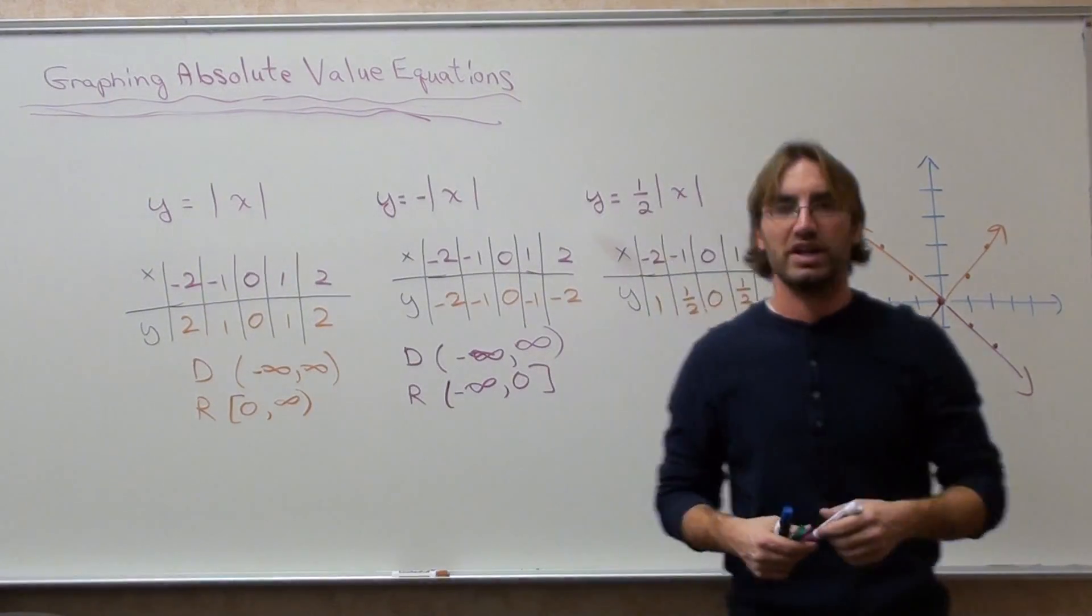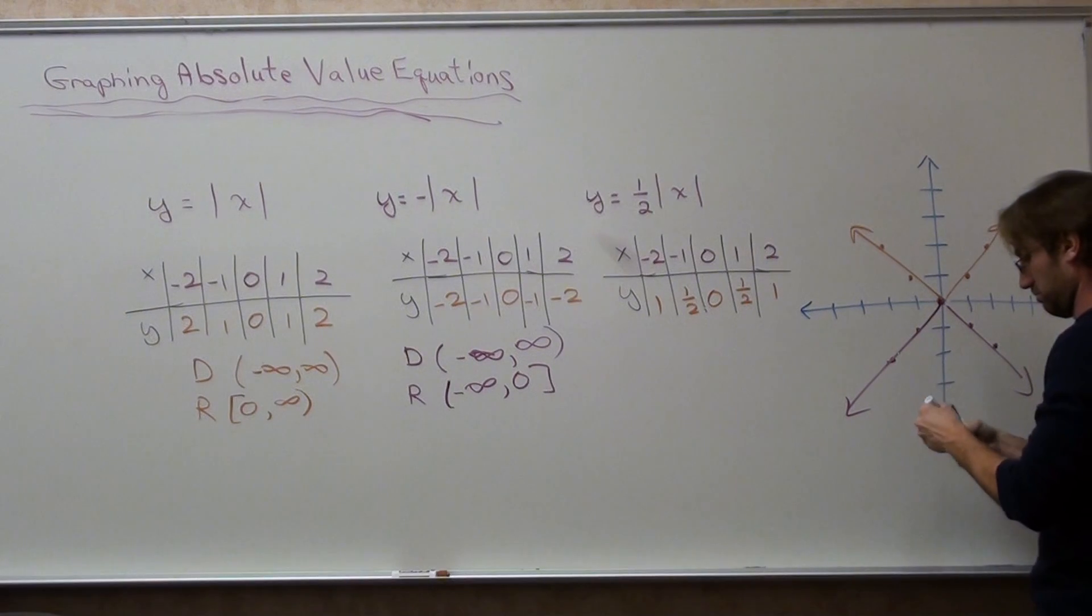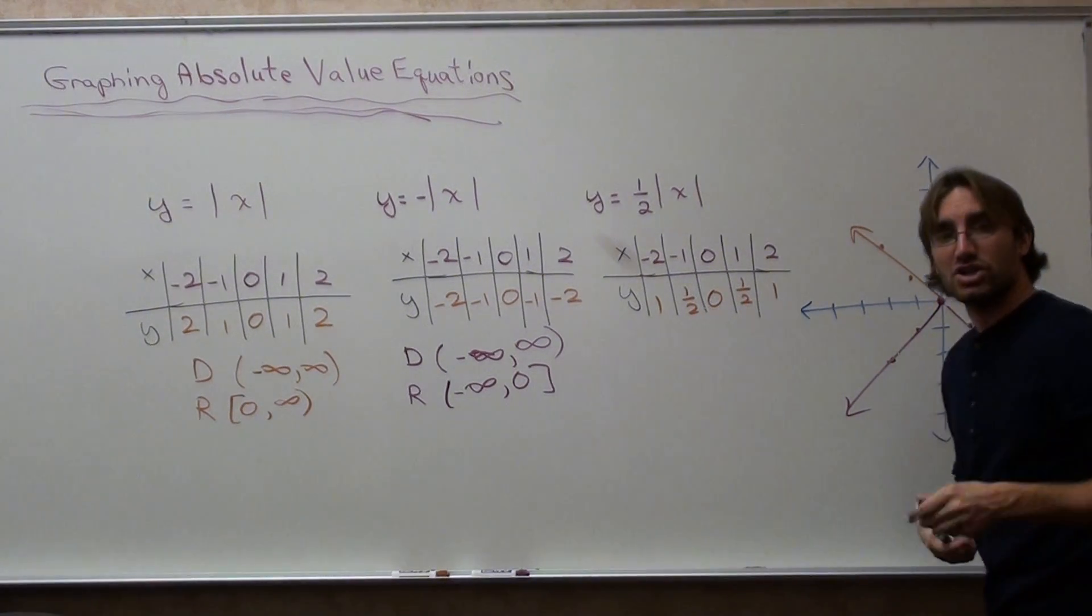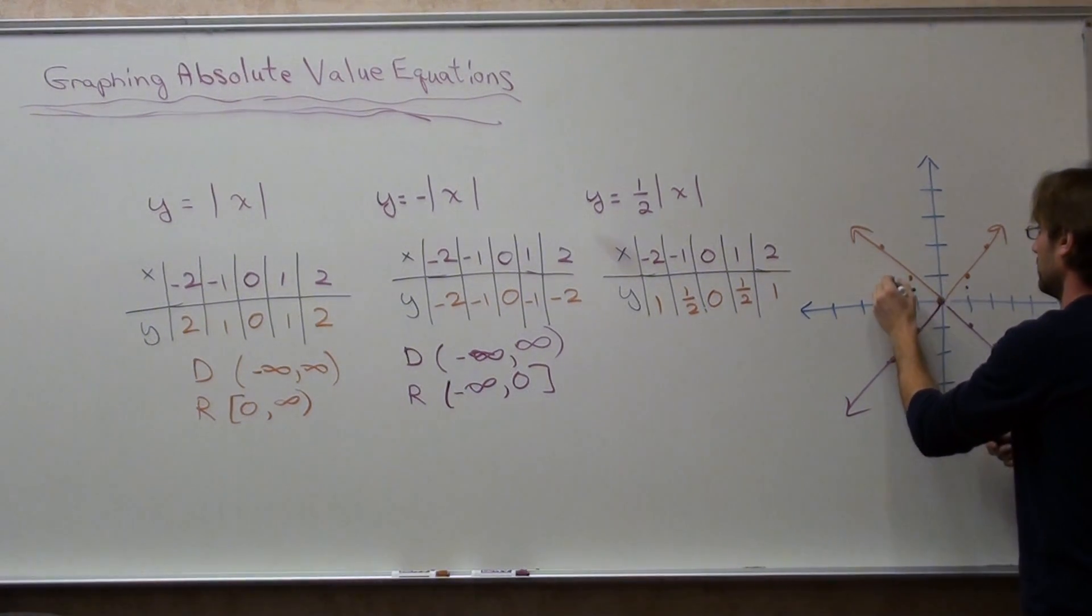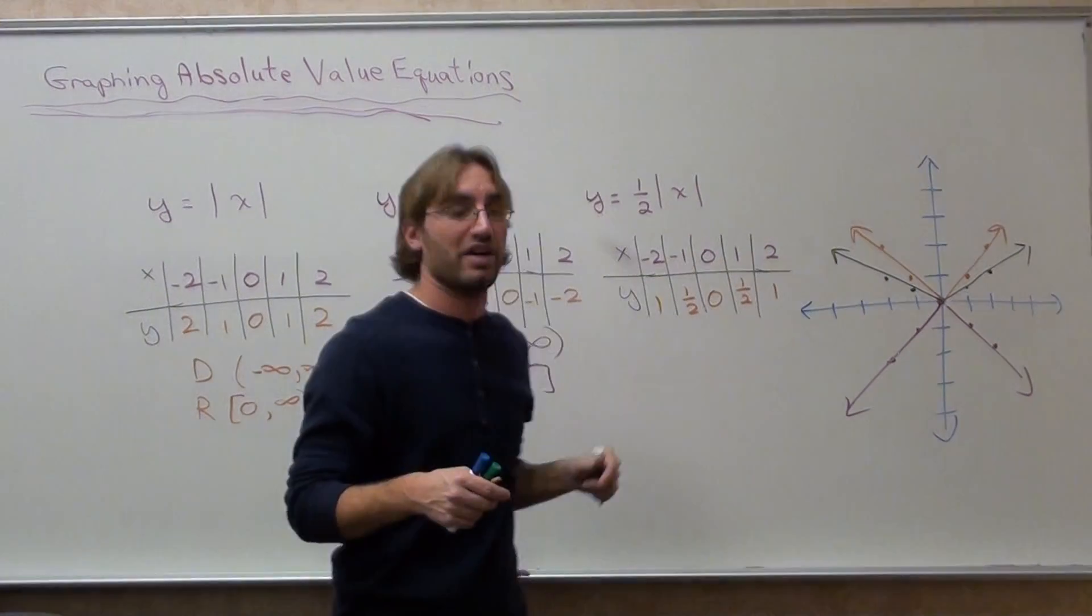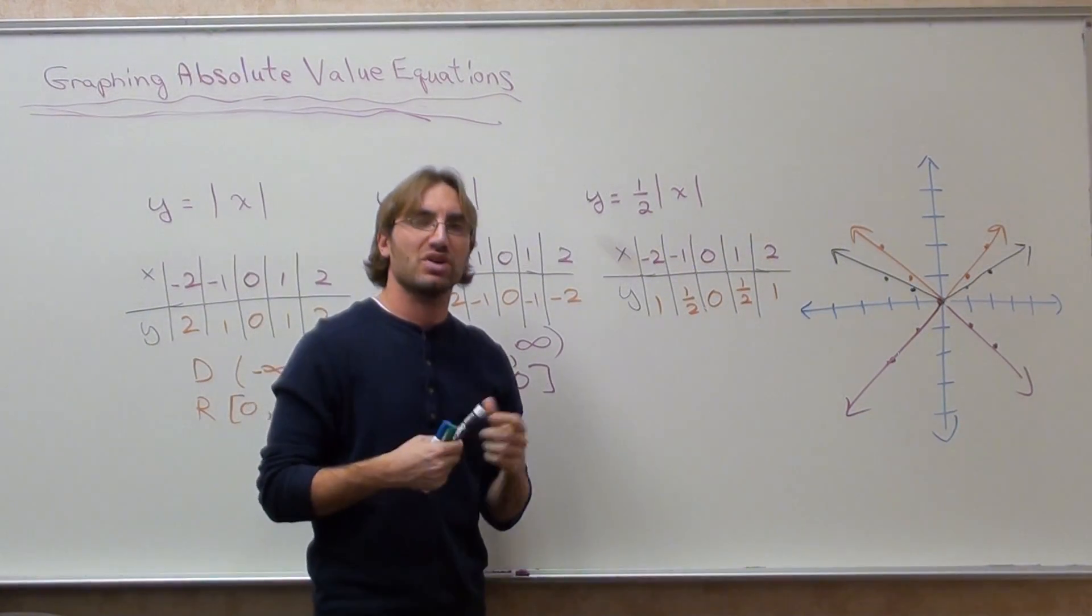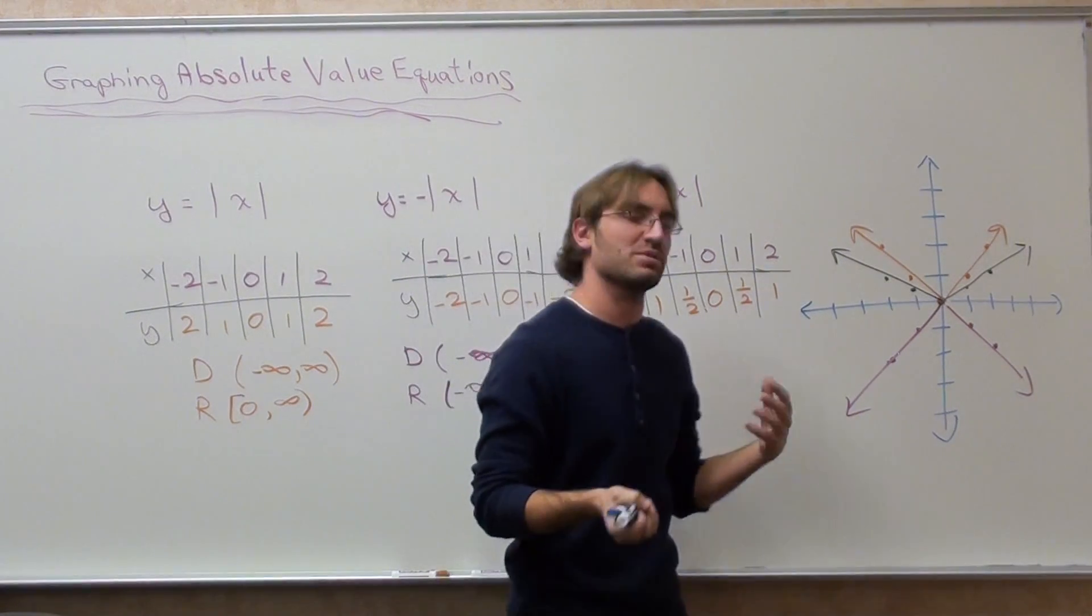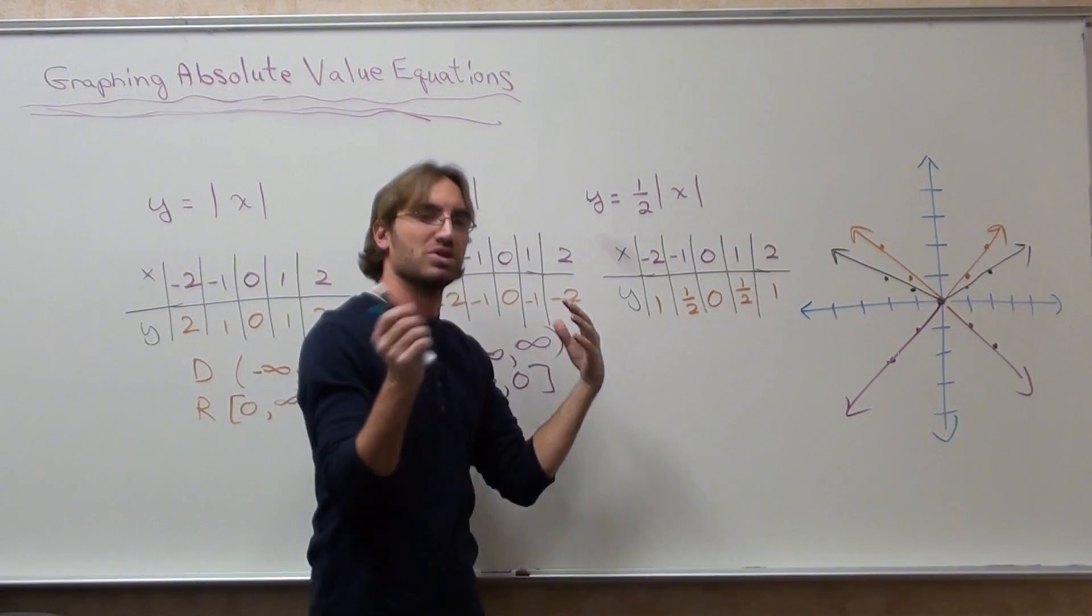And then last but not least, this one right here, when I plot the points, I shall do so in black, is similar to the first graph, except it's wider now. It's kind of difficult to say, well it looks bigger. It's not that it's bigger, it's just that it goes up slower. So a smaller number will have it go up slower.